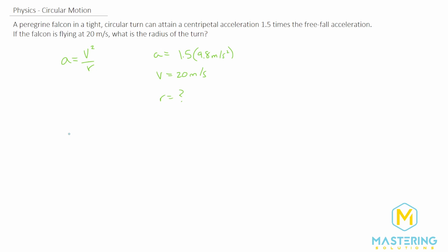So let's isolate this for the radius. We'll multiply both sides of the equation by r, so velocity squared is equal to radius times the acceleration, and then we'll divide by acceleration. So the radius is equal to v squared over a.